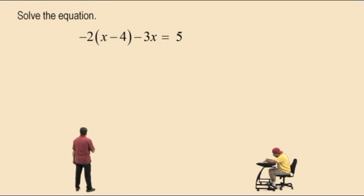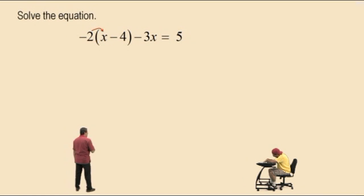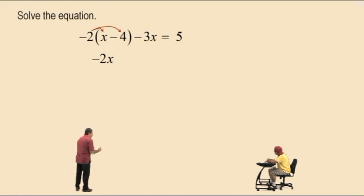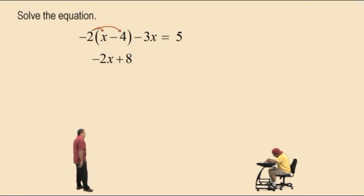We've got to get rid of the parentheses by using what property? Distributive property. That's right. So negative 2 times x is what? Negative 2x. That's right. Now we're treating that subtract 4 as a negative 4. And when we distribute the negative 2 to the negative 4, negative 2 times negative 4 is a positive 8. So we add a positive 8. That's right. Bring down our work.